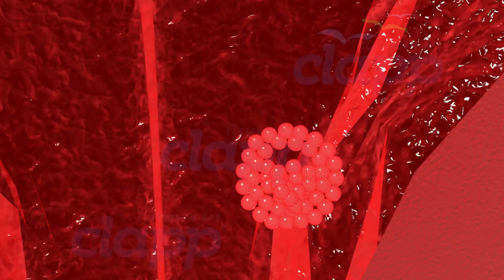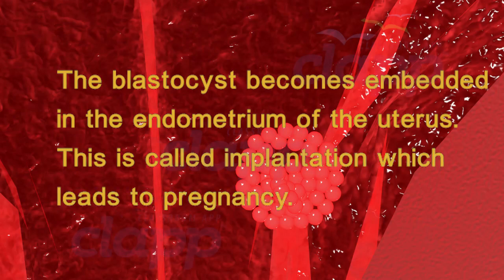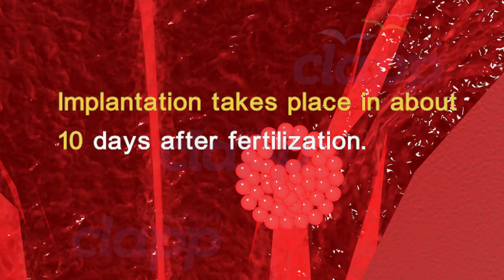After attachment, the uterine cells divide rapidly and cover the blastocyst. The blastocyst becomes embedded in the endometrium of the uterus. This is called implantation, which leads to pregnancy. Normally, implantation takes place about 10 days after fertilization.